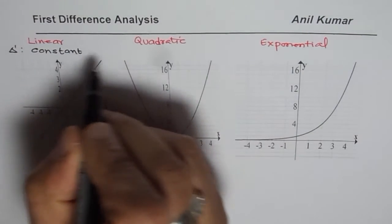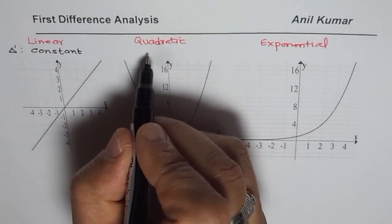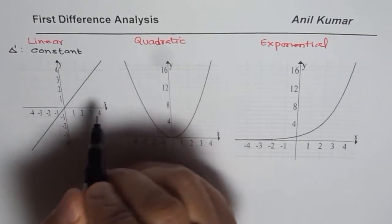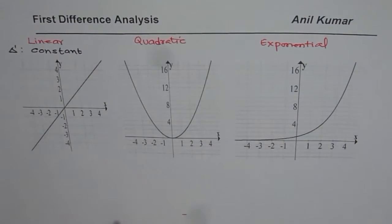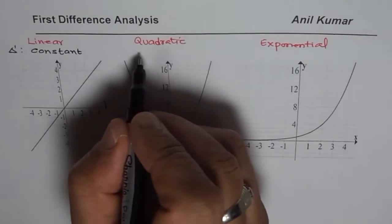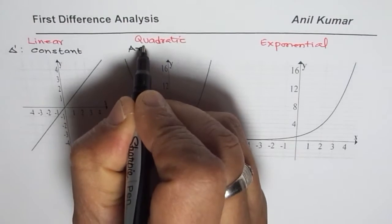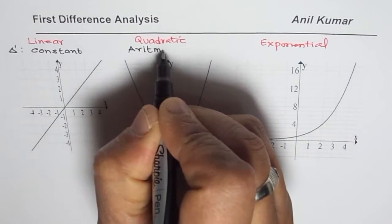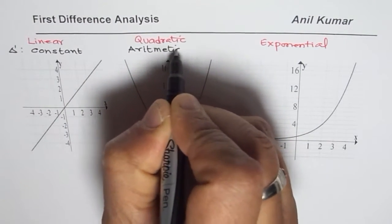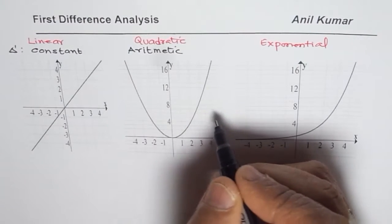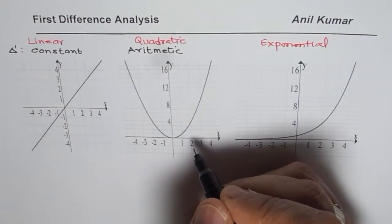For the second graph, we expect that first difference should not be constant, but second difference will be constant. How about first difference? It will however have a pattern and that pattern will be arithmetic in nature. So that we say the pattern will be arithmetic. So you could get the next terms by arithmetic series, for example.